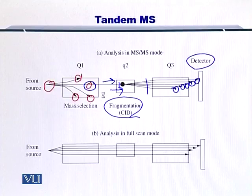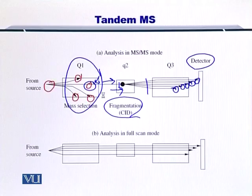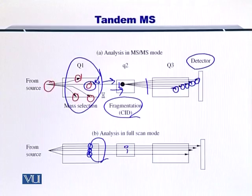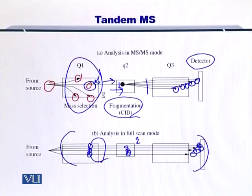Another important thing to note is that unlike the mass selection step that selects just one MS1 peak, you can also have the entire MS1 dataset transferred to the fragmentation chamber for onward analysis. Of course, this will be extremely complex, as the data will be a mixture of multiple precursor peptides and proteins.